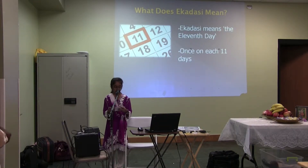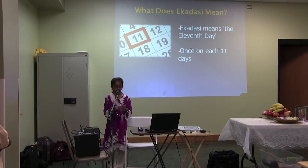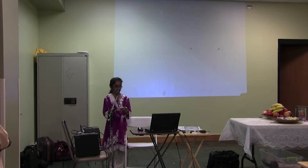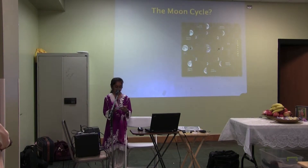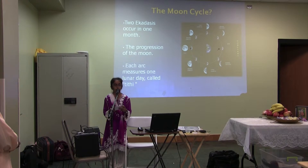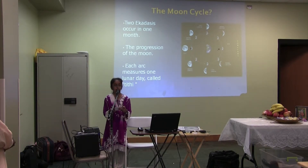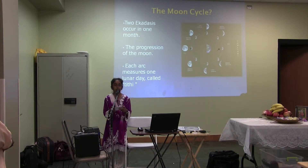What does Ekadashi mean? Ekadashi in Sanskrit means the 11th day. Ekadashi comes twice in the lunar month, once on each of the 11 days of the bright and dark fortnight. Two Ekadashis occur in one month according to the positions of the moon. The progression of the moon from full moon to new moon is divided into 15 equal arcs. Each arc measures one lunar day called a Tithi. Ekadashi refers to the 11th Tithi, or lunar day.